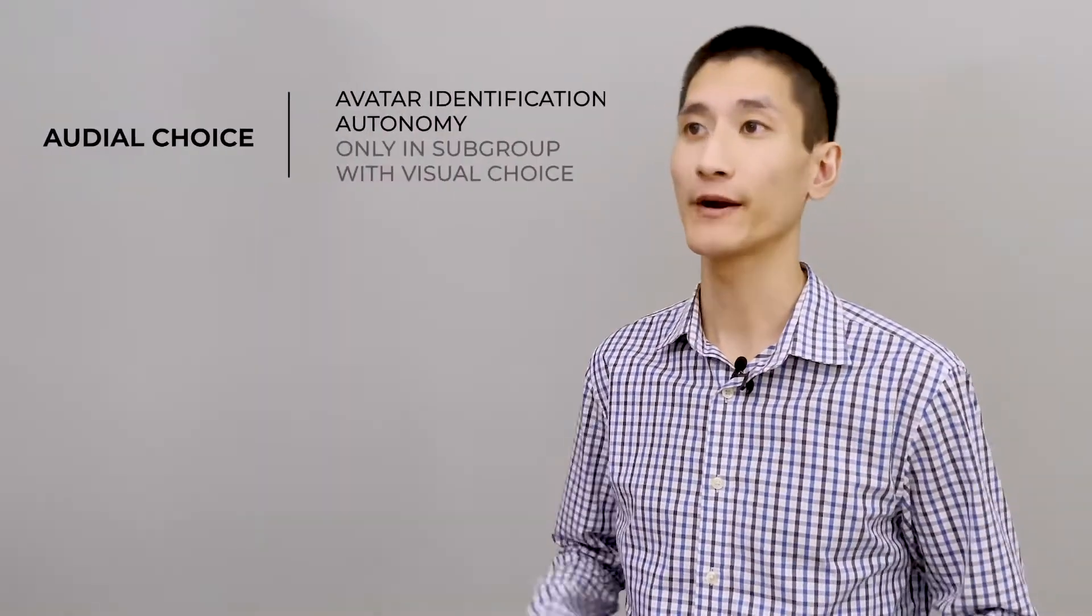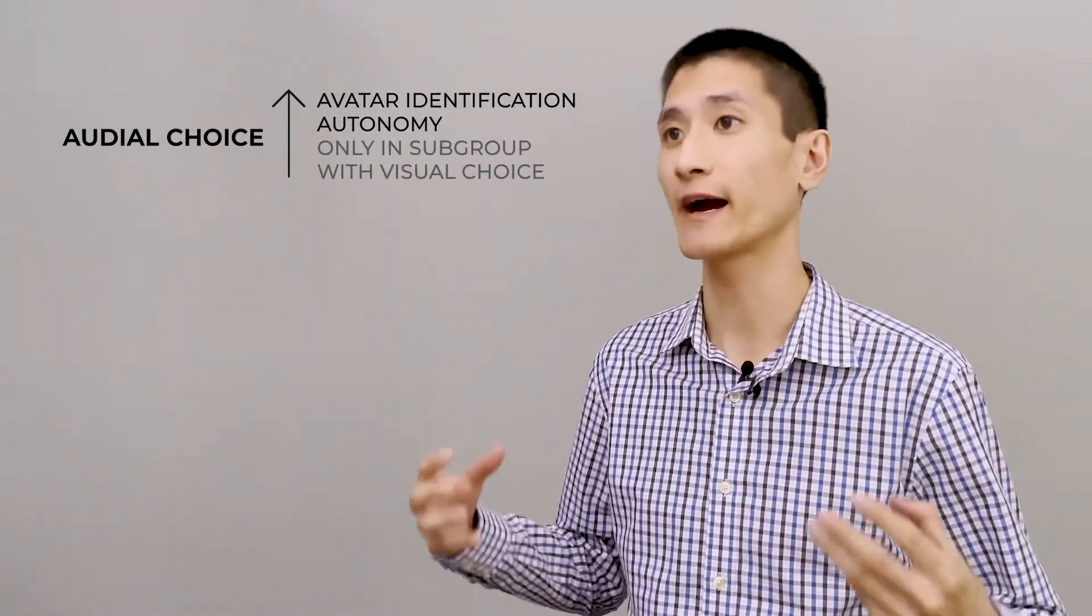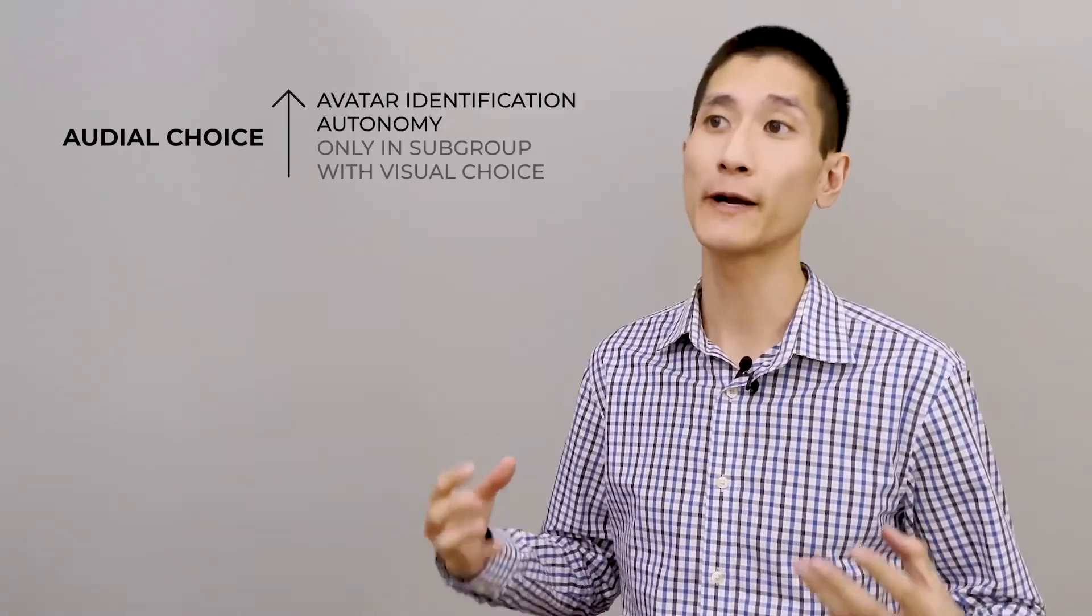Participants with visual choice experienced higher avatar identification and autonomy. Participants with audio choice experienced higher avatar identification and autonomy, but only within the group of participants who had visual choice available.